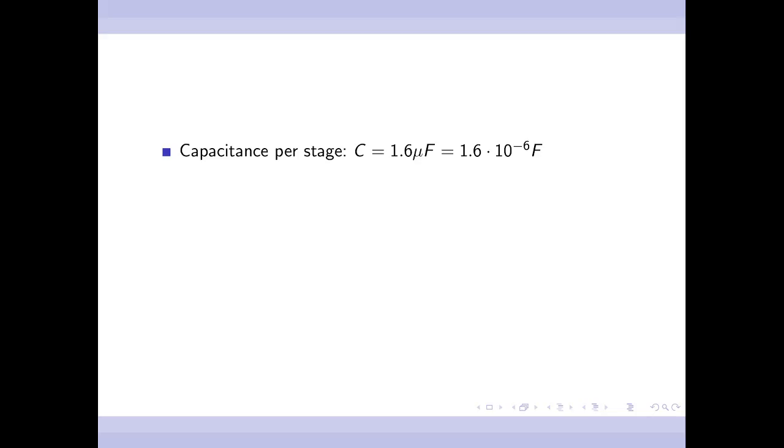First of all, what do we know from the manual? The capacitance per stage is 1.6 microfarad. A microfarad is a millionth of a farad, which is a unit of capacitance.